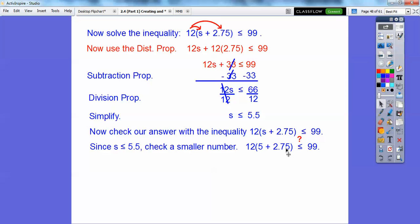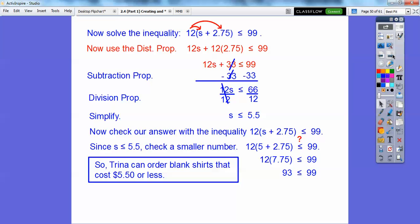All right, and then 12 times that is 93. 93 is less than or equal to 99. So this was a good enough answer. So S is our cost, $5.50. So Trina can order blank shirts that cost $5.50 or less, or no more than $5.50 on that.